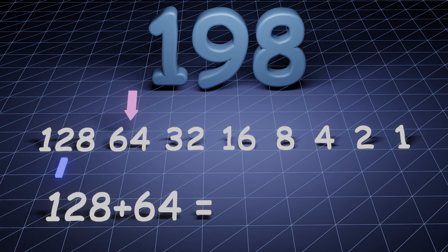Can we add 64 to our sum without surpassing 198? 128 plus 64 equals 192, so we can write a binary 1 below 64.